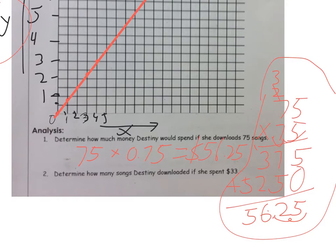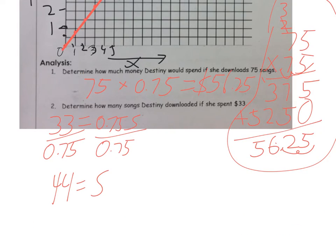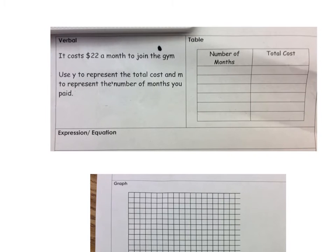Determine how many songs Destiny download if she spent $33. So in this case, it's telling me Y equals 33. That's going to equal 0.75S. So in this one, you have to isolate. This is just solving the equation. You're going to end up dividing by 0.75. And in this case, it ends up being S equals 44.